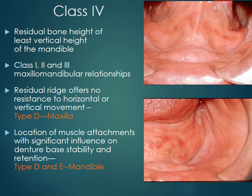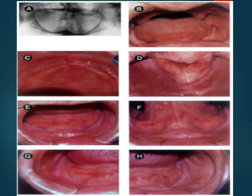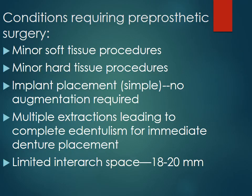The residual bone height at the least vertical height can be Type C, with morphology types ranging A through H. The conditions requiring minor preprosthetic surgery include minor soft tissue procedures, minor hard tissue procedures, implant placement (simple, no augmentation required), multiple extractions leading to complete denture for immediate denture placement, and limited inter-arch space of 18 to 20 mm.